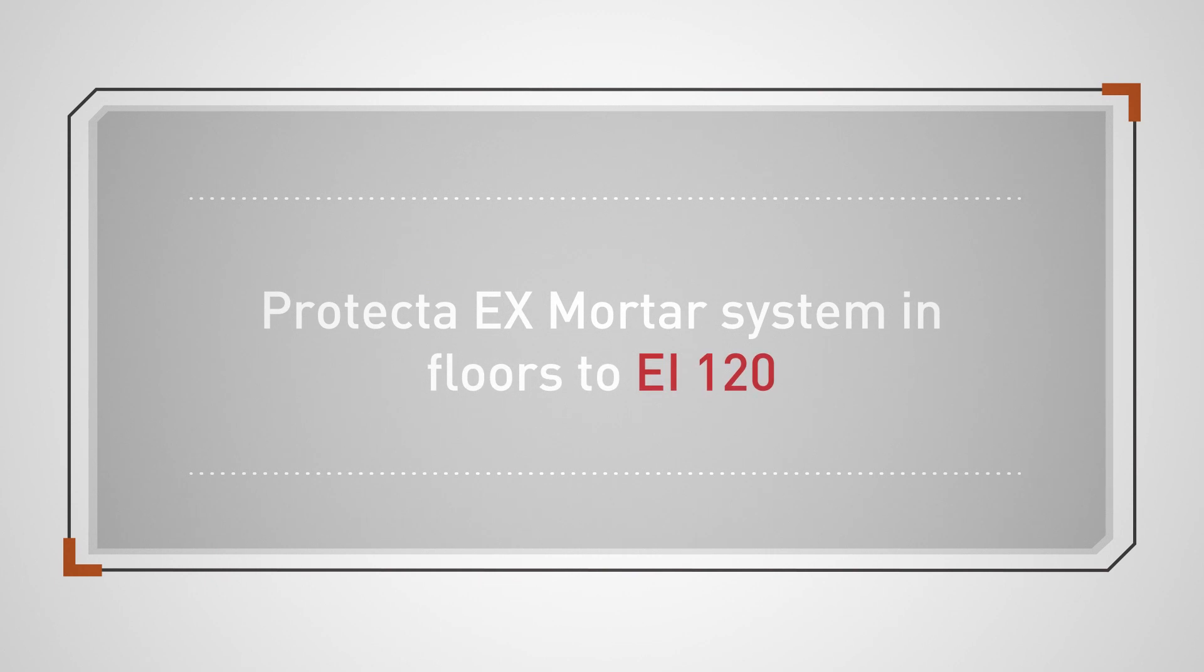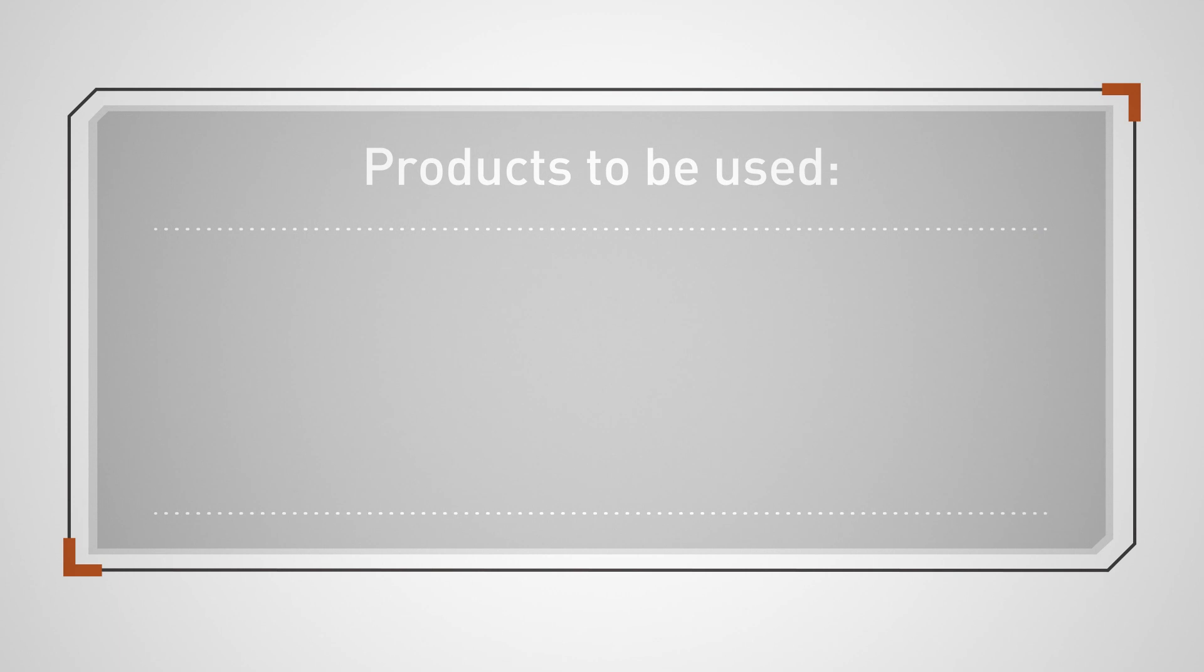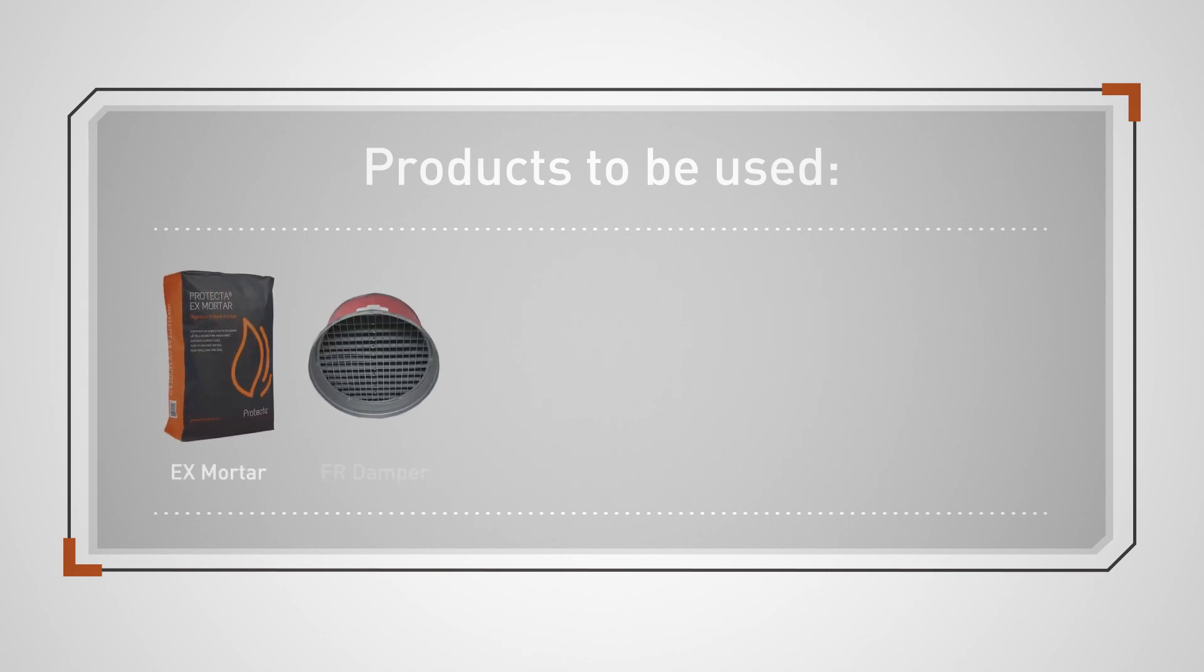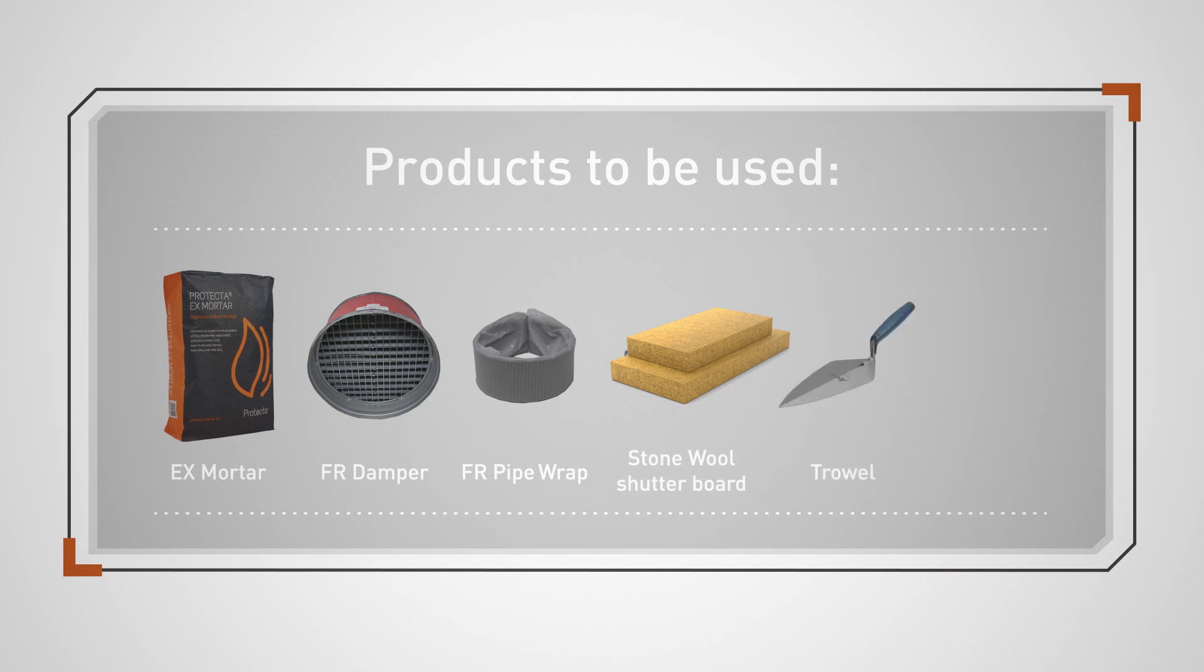Protecta EX Mortar System in Floors to EI 120. Products to be used: EX Mortar, FR Damper, FR Pipe Wrap, Stone Wool Shutter Board, Trowel, and a Bucket of Clean Water.